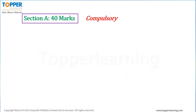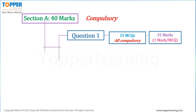Section A is 40 marks and the whole section is compulsory. Section A comprises of 2 main questions: Question 1 and Question 2. Question 1 consists of 15 multiple choice questions, each question of 1 mark, hence total 15 marks are allotted to Question 1.